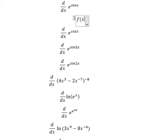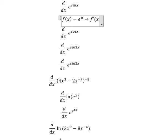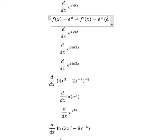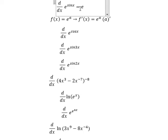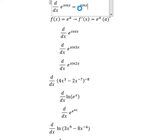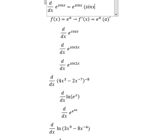For example, we have e to the power of a. If we do the first derivative, we keep e to the power of a, and we continue to do the first derivative of a. So for the first one, if we do the first derivative of e to the power of sin s, we keep this one and then we continue to find the first derivative of sin s.